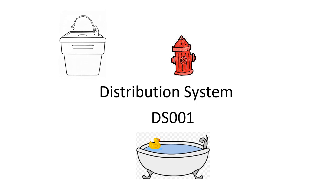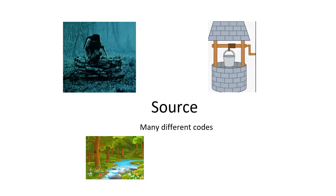There are two different categories of places where you might take your samples. One is the distribution system and the other is the source. Your distribution system is defined as any place where a user turns on a faucet and gets water — it can be a fire hydrant, a bathtub, a drinking fountain, whatever. When you go to Waterlink, testing required on the distribution system will be listed first, then all your sources.